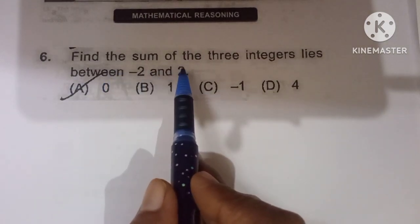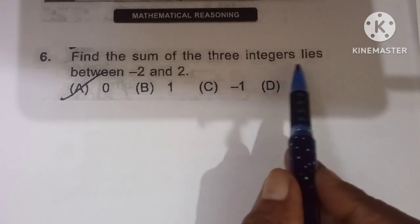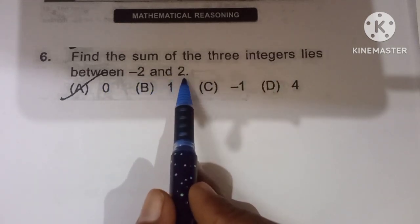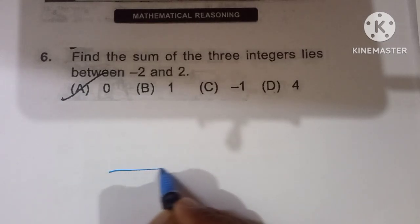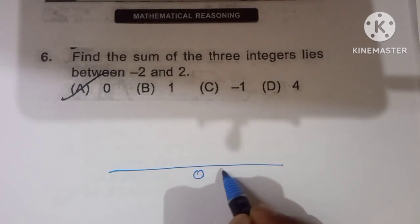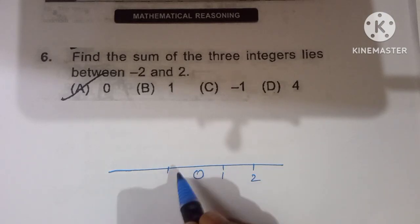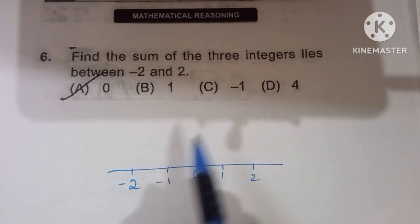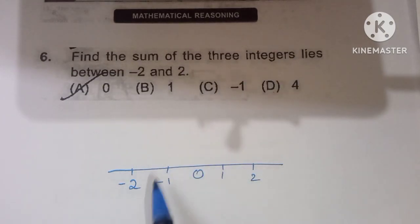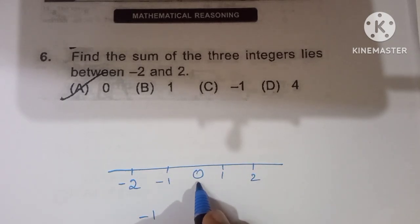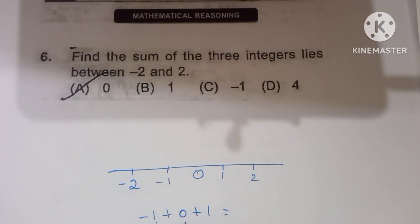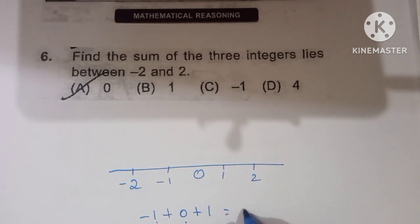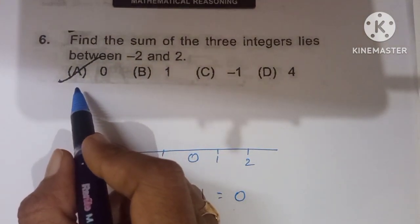Sixth question: find the sum of the 3 integers that lie between minus 2 and 2. The integers between minus 2 and 2 are minus 1, 0, and 1. The sum is minus 1 plus 0 plus 1, which is 0. So option A is the correct one.